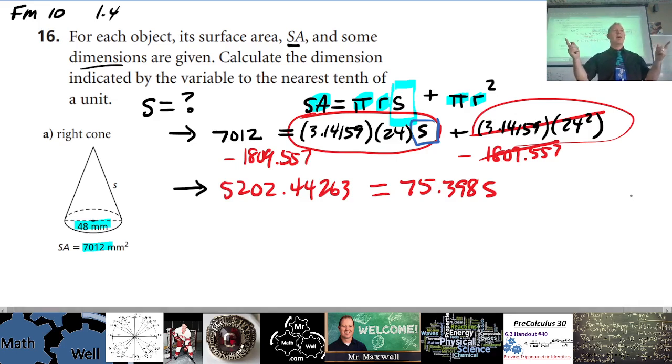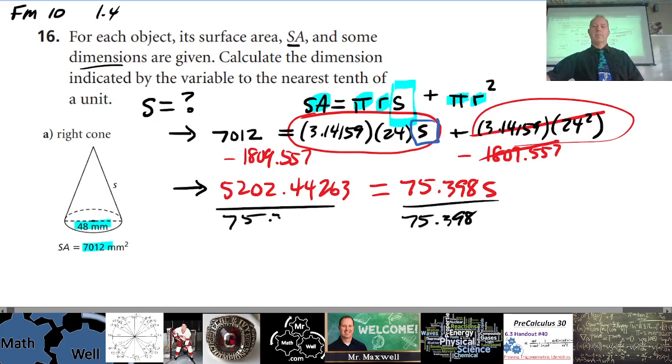If you're okay with that, now what you do is you divide to get s all by itself. So what do we divide by? This 75 number. Okay, and that will give us just s on this side, and that's what we are looking for.